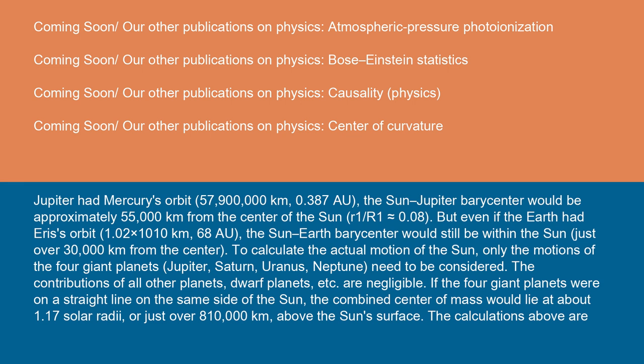To calculate the actual motion of the Sun, only the motions of the four giant planets (Jupiter, Saturn, Uranus, Neptune) need to be considered. The contributions of all other planets, dwarf planets, etc. are negligible.